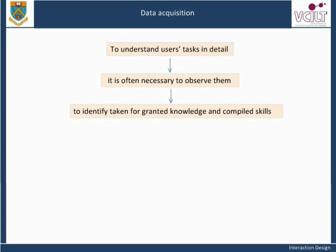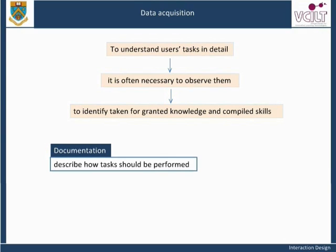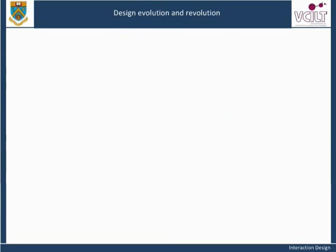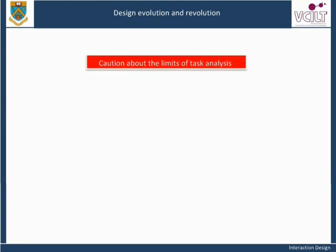A third source of data for task analysis is often existing documentation — there may be procedure documents that describe how tasks should be performed, which may or may not describe how they are actually performed. In what follows, we are assuming that data has been acquired from somewhere, and we focus on ways of analyzing that data. Before we start, though, a note of caution about the limits of task analysis: it's no good for revolutionary design.